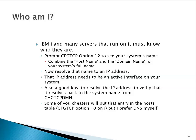Now let's talk about proper system identification. IBM i needs to know who it is — this is very important, as many servers and services will not operate correctly if the system doesn't know its own name. You want to type CFGTCP and choose option 12, then look at the host name and the domain name. Put those together — for example, v7r3prod.frankandie.com — that's the fully qualified domain name.